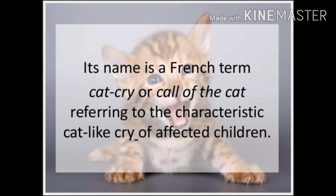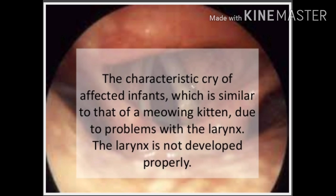Cri du chat is a French term meaning 'cat cry,' referring to the characteristic cat-like cry of affected children. Those children produce a meow-like sound due to a problem in the larynx, which is not properly developed. Patau syndrome is due to trisomy of chromosome 13, also known as trisomy D or trisomy 13.